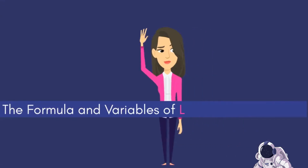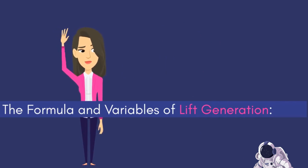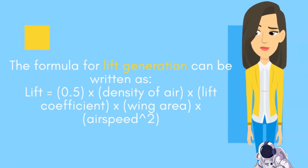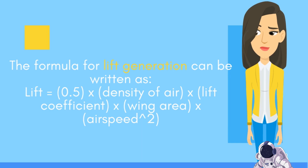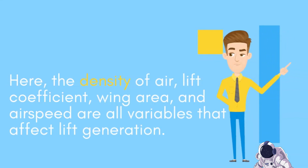The formula for lift generation can be written as: Lift = 0.5 × density of air × lift coefficient × wing area × airspeed squared. Here, the density of air, lift coefficient, wing area, and airspeed are all variables that affect lift generation.